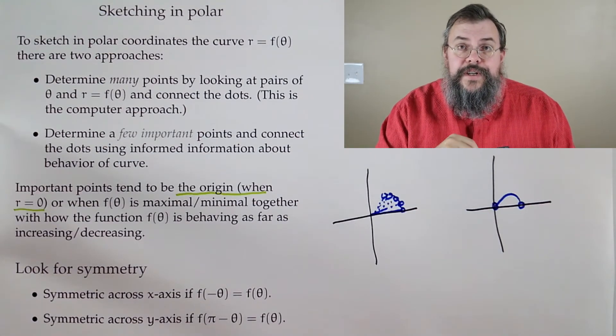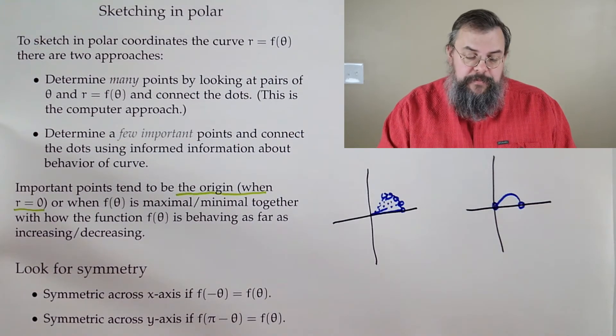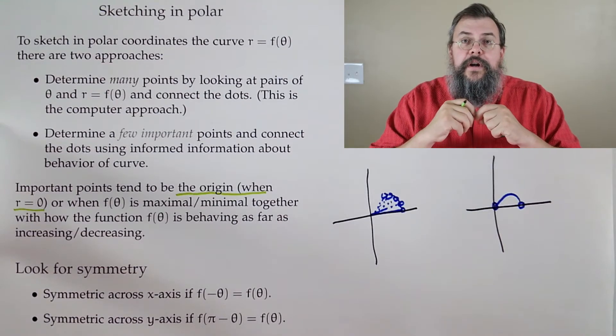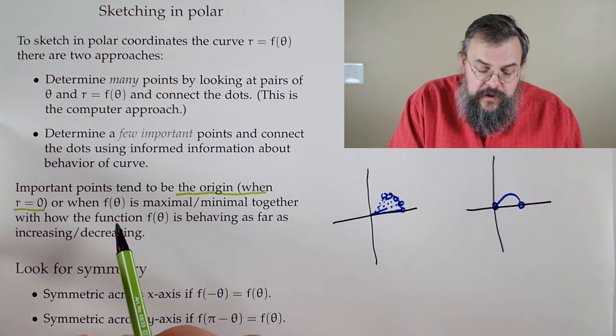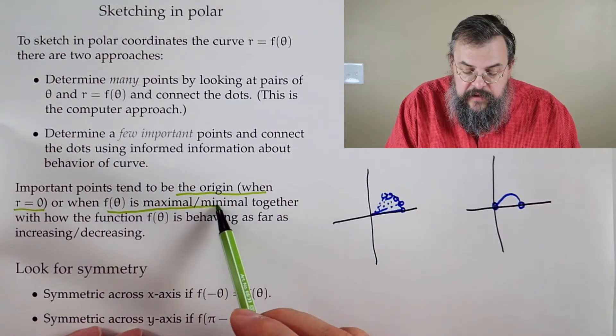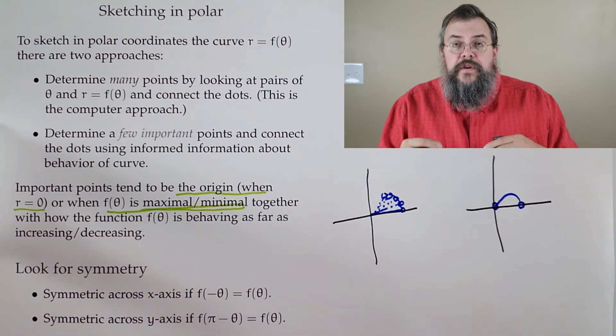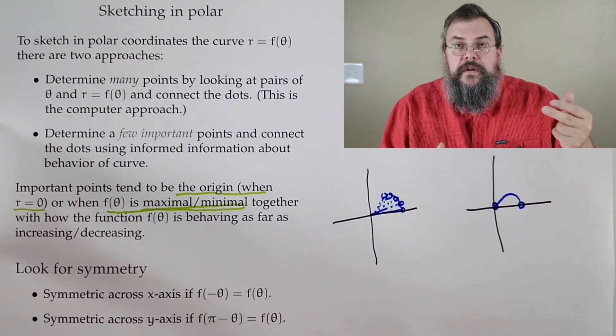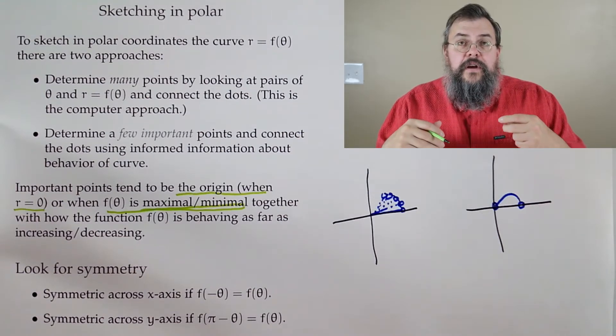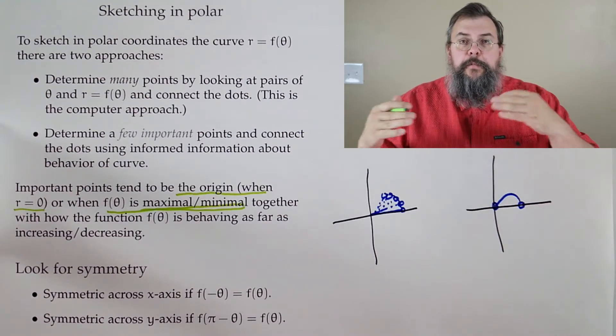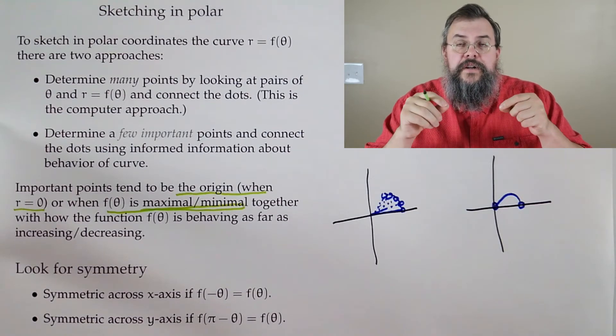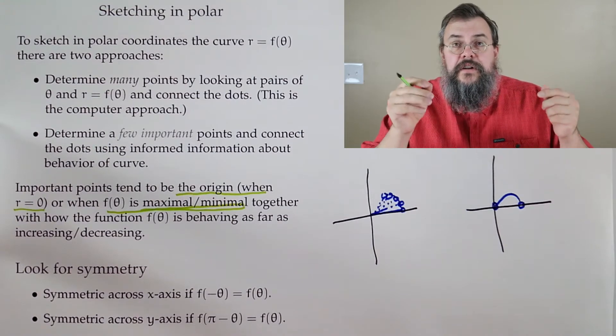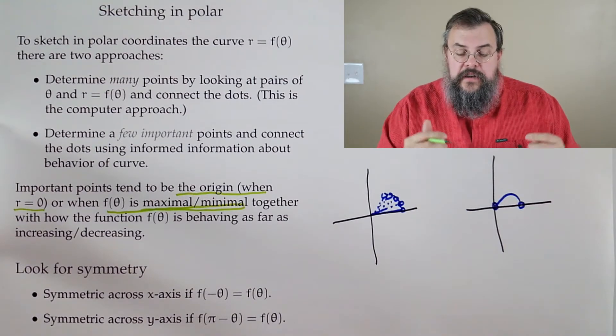The other thing, of course, is not only when are you at the middle, but when are you far from the middle? So that's when you look at maxes and mins. If you understand zero, furthest out, nearest, max, min, and you say okay, what's happening? Am I moving in, am I moving out? You say, okay, plot the interesting points and use information about moving in, moving out to connect. You're going to get a pretty good idea of what the curve looks like.